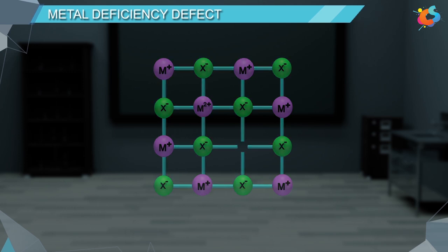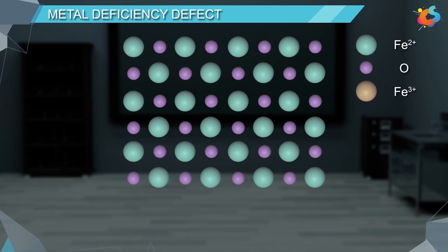Example: FeO is mainly found having a composition of Fe 0.95 O. In crystal of FeO, if some of the Fe2+ ions go missing, then the loss is compensated by the addition of Fe3+ ions. In this way, though the overall charge is balanced, some spaces will be left vacant in the crystal.